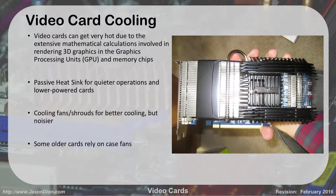They use passive heat sinks for quiet operation and for lower power cards. Passive heat sinks can't remove as much heat as an active heat sink — passive means it's just sitting there, no cooling fans. If you add a cooling fan or shroud, you'll get more cooling but noisier operation. Some older cards had none of this at all because the processing was so minimal that they relied on the case fans to cool the card.